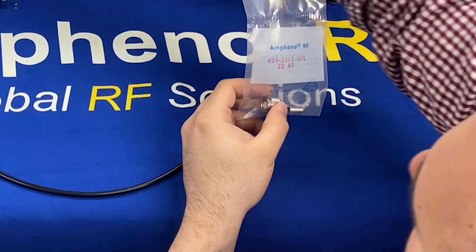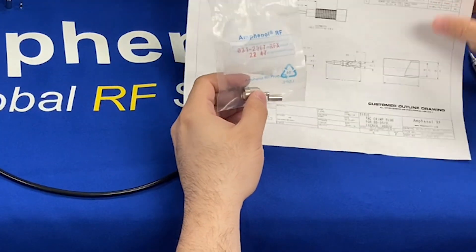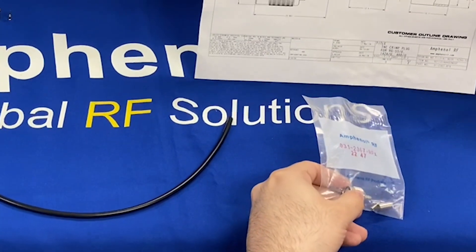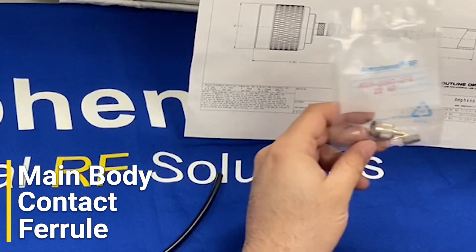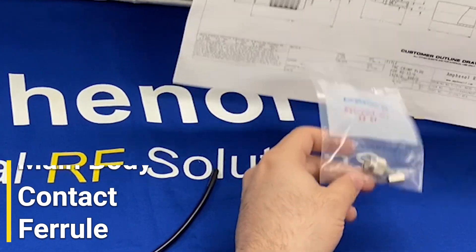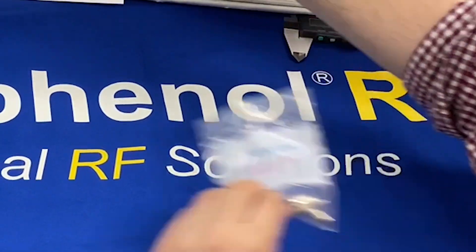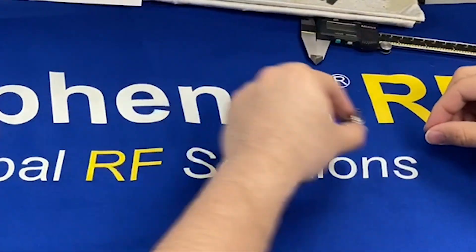First step is always to make sure all components are present. We can see from our customer outline drawing here there should be three components: a main body, a contact, and ferrule. And looking in the bag, all three components are in fact present. Outside the bag, this is what they look like.